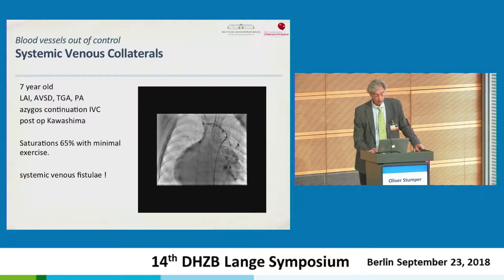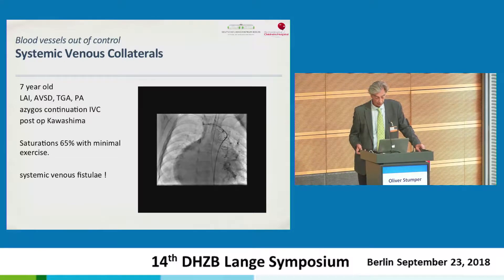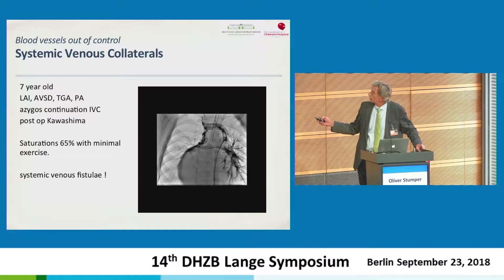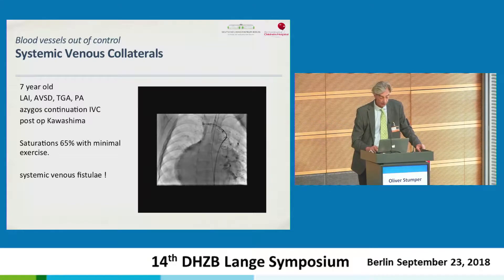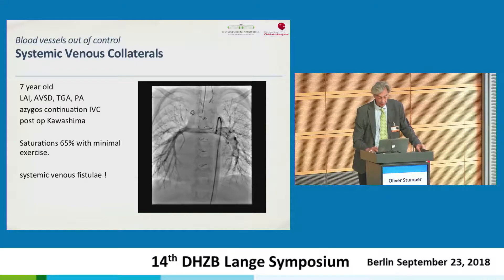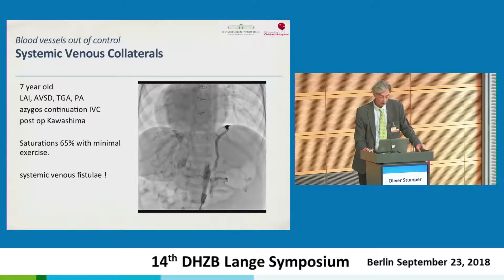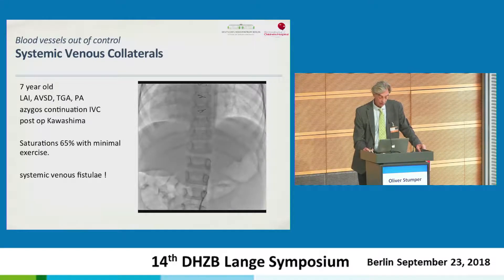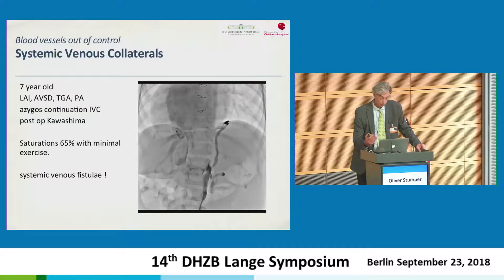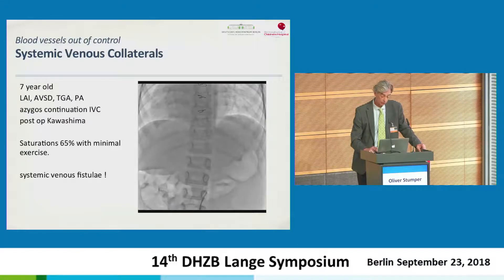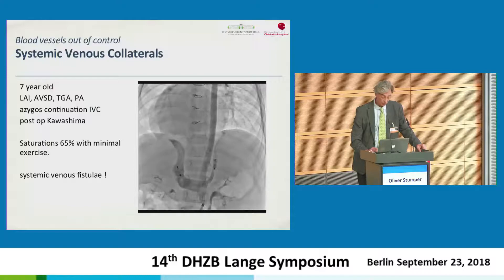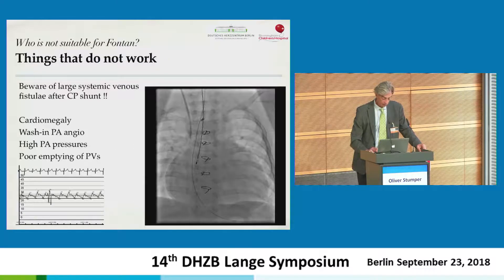Another example is left atrial isomerism after a Kawashima-type operation. You see systemic venous collaterals, and also when you look carefully, filling of the hemi-azygos vein. In all patients with Kawashima-type circulation and unexpected desaturation, you should look carefully at the hemi-azygos or below — normally at the level of the renal vessels — as there may be very significant fistula there. We block these off and delay Fontan completion.